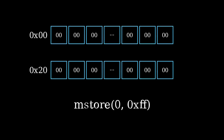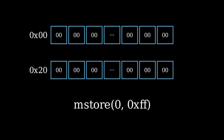For example, mStore(0) with the value 0xFF will write 0xFF starting from memory location 0. Since FF is 1 byte, to the left of this we will have 31 zeros. Hence, you can see over here that at the end of the first row, the value 00 will be updated to FF.